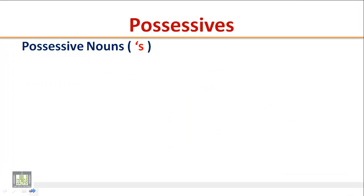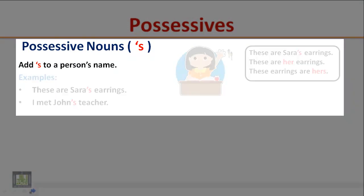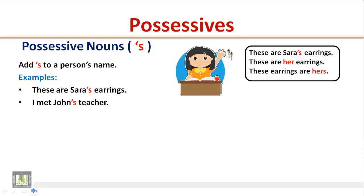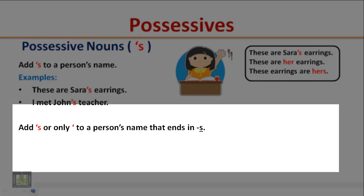Possessive Nouns — Apostrophe S. Add apostrophe S to a person's name. Examples: These are Sarah's earrings. I met John's teacher. Add apostrophe S, or only an apostrophe, to a person's name that ends in S.